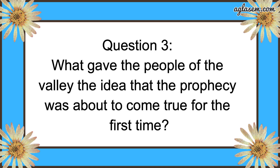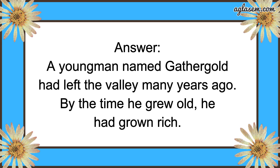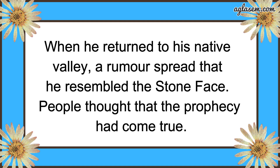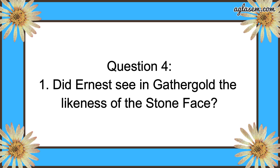Question 3 asks: what gave the people of the valley the idea that the prophecy was about to come true for the first time? The answer is: a young man named Gather Gold had left the valley many years ago. By the time he grew old he had grown rich. When he returned to his native valley, a rumor spread that he resembled the stone face, and people thought the prophecy had come true.